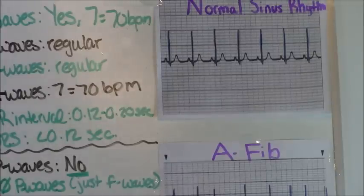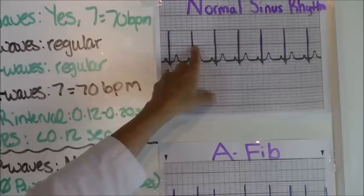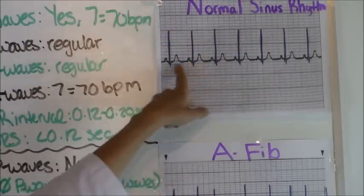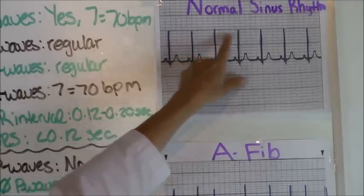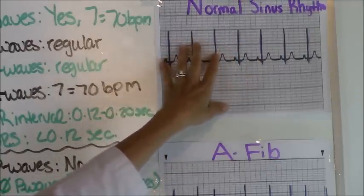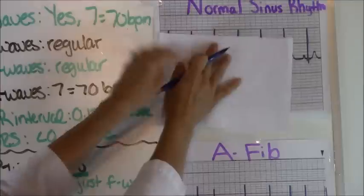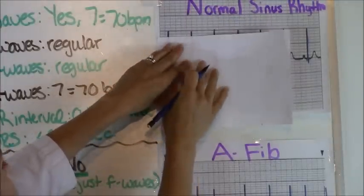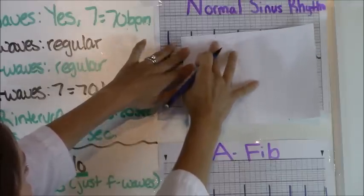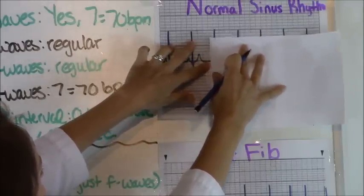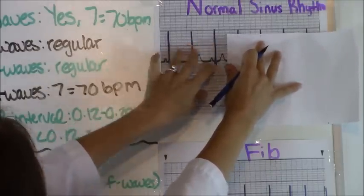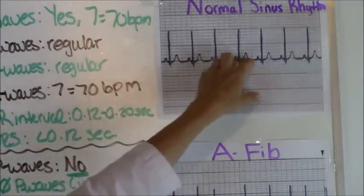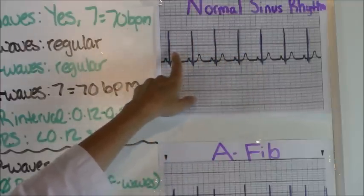Next, we're going to ask ourselves if our R waves are regular. Remember you have QRST, so we're looking at the R waves — the tops, which are the spikes. We're going to see if these are regular using the same method as with the P waves. Marking on our piece of paper and comparing them, they are definitely regular. And we count seven R waves in this rhythm.